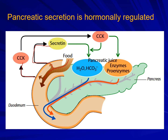Secretin approaches the pancreas via blood and mostly works on the ductal cells. It works through a second messenger — cyclic AMP — and via this second messenger it produces a large volume of watery pancreatic juice having a high concentration of bicarbonate, approximately 145 to 150 milliequivalents of bicarbonate per liter. This pancreatic juice released under the influence of secretin is watery and highly alkaline in nature.